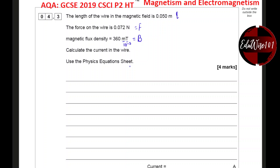So if I convert that, 360 mT will be 0.360 Tesla. It's better to convert it here so we can use it in the equation. We need to calculate the current in the wire, which is I.